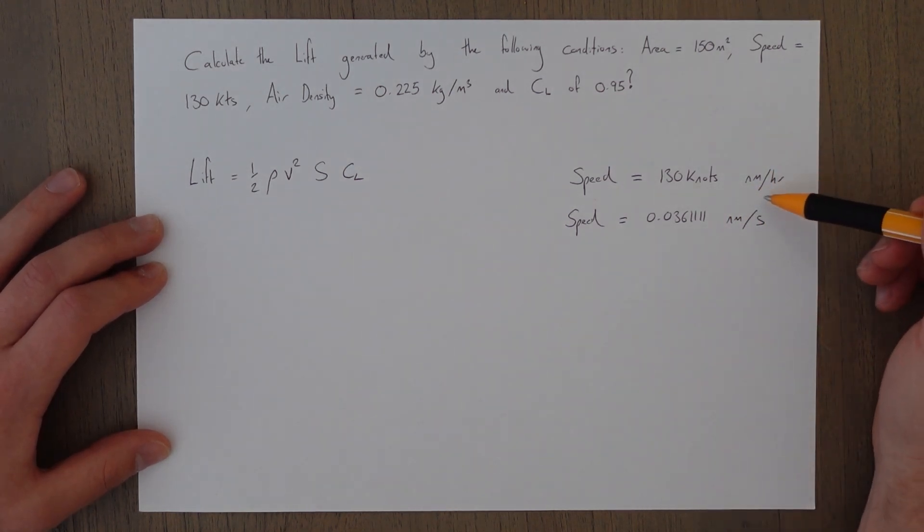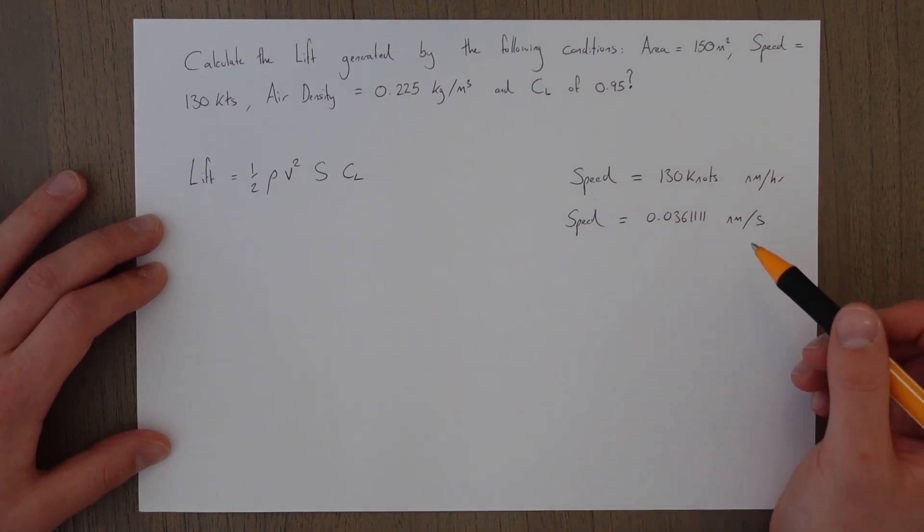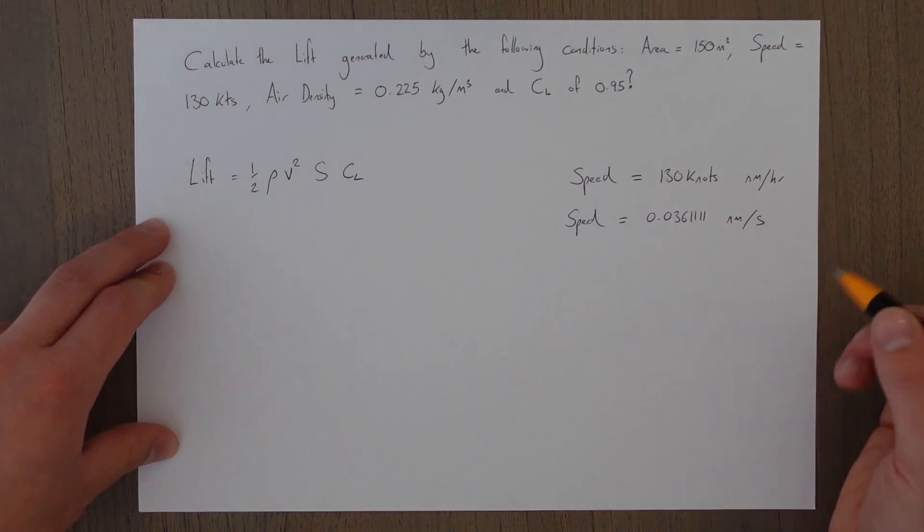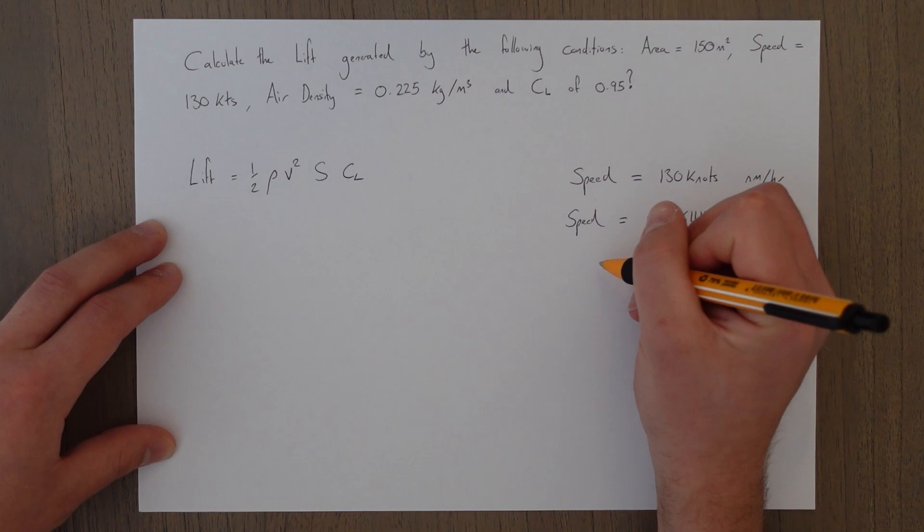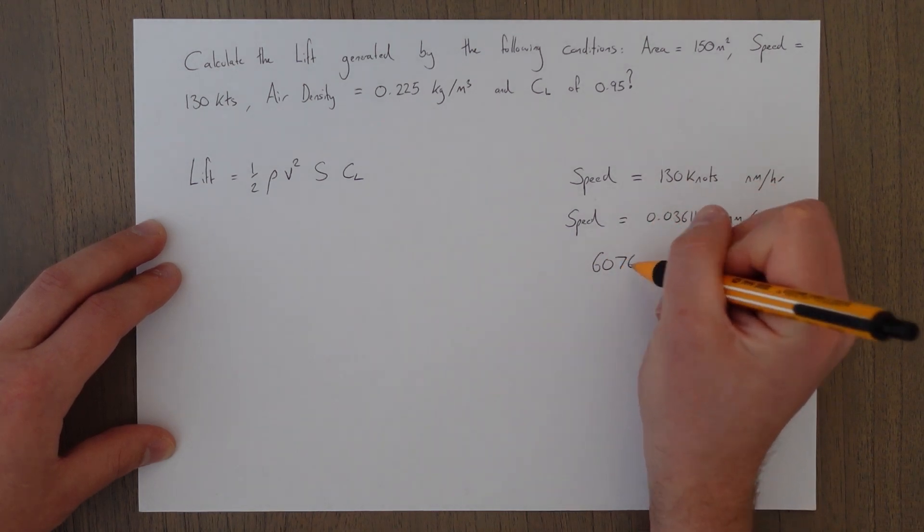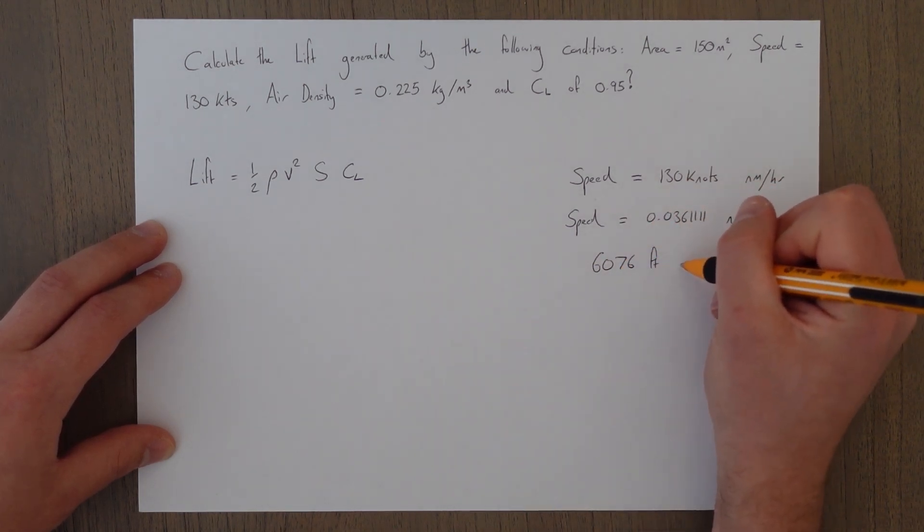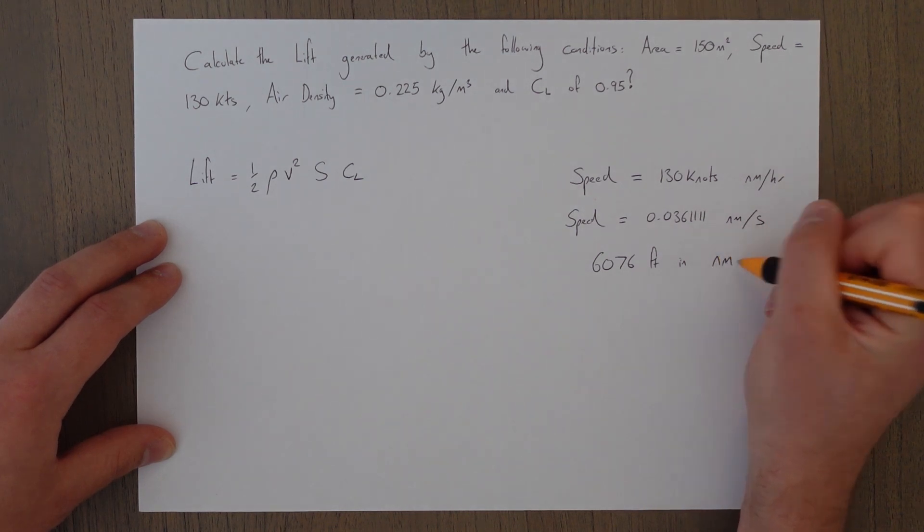which would give us speed of 0.036 recurring nautical miles every second. Because we've divided by 60 and then divided by 60 again to get the seconds. So how many feet are in a nautical mile? We know that there are 6076 feet in a nautical mile.